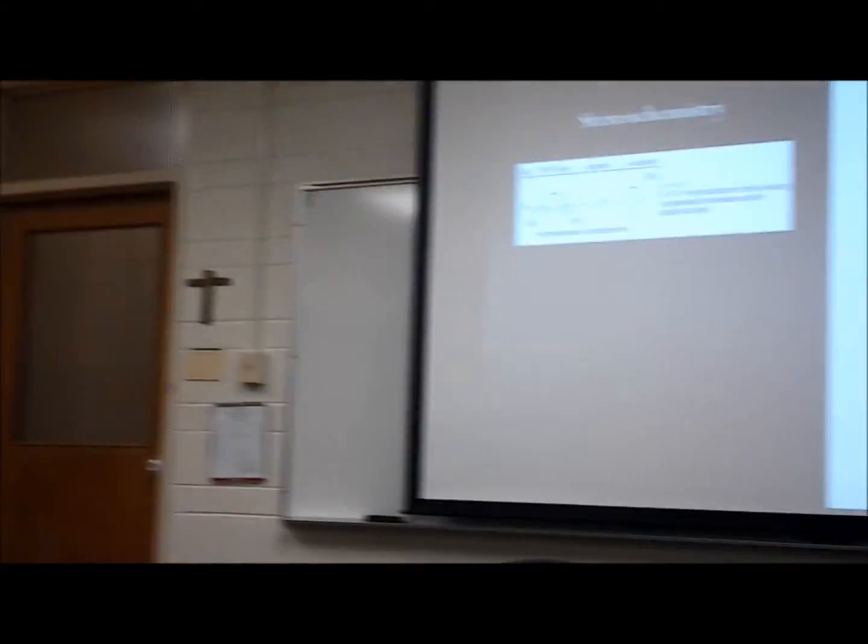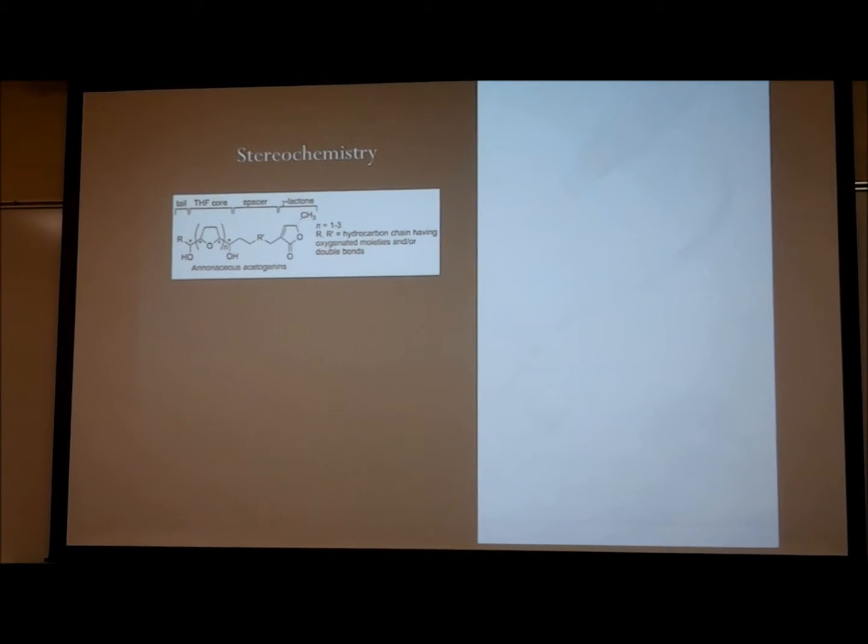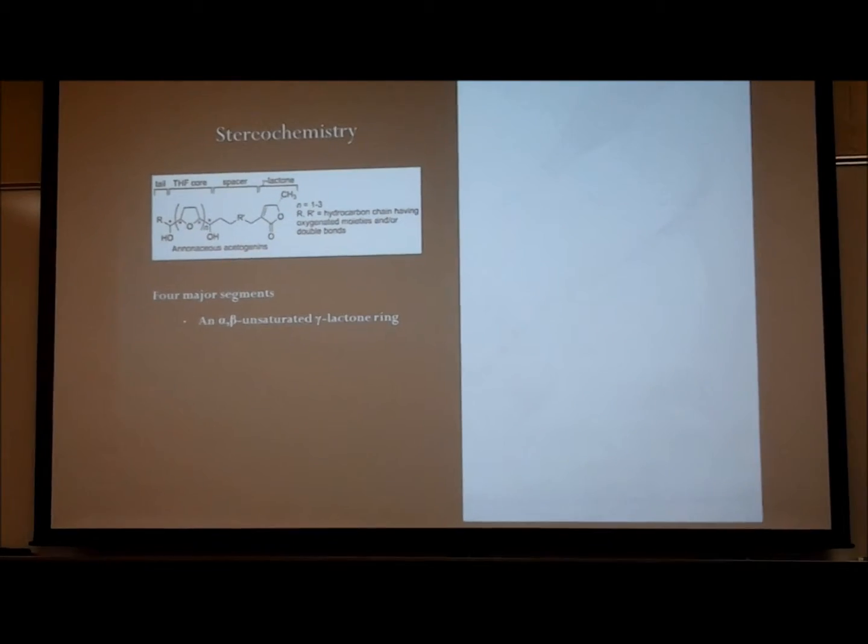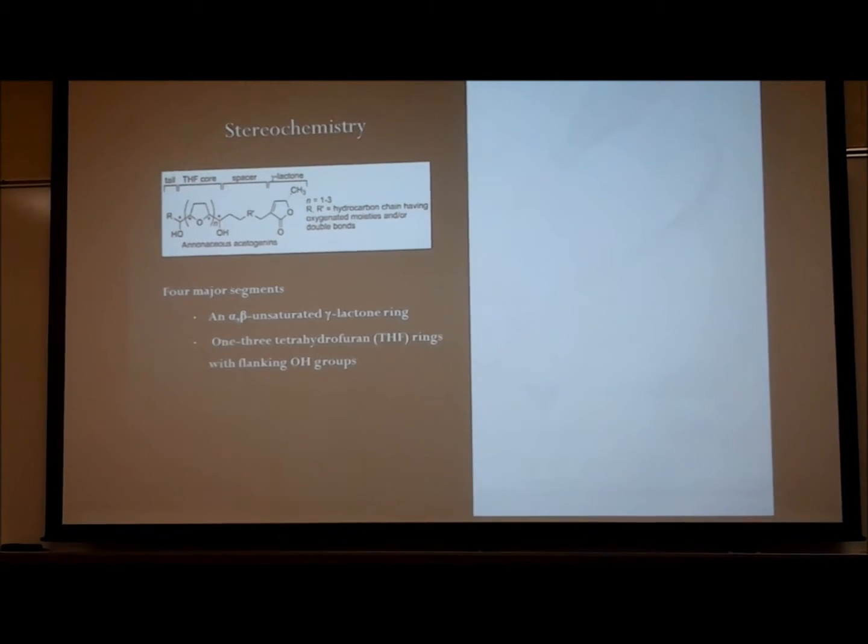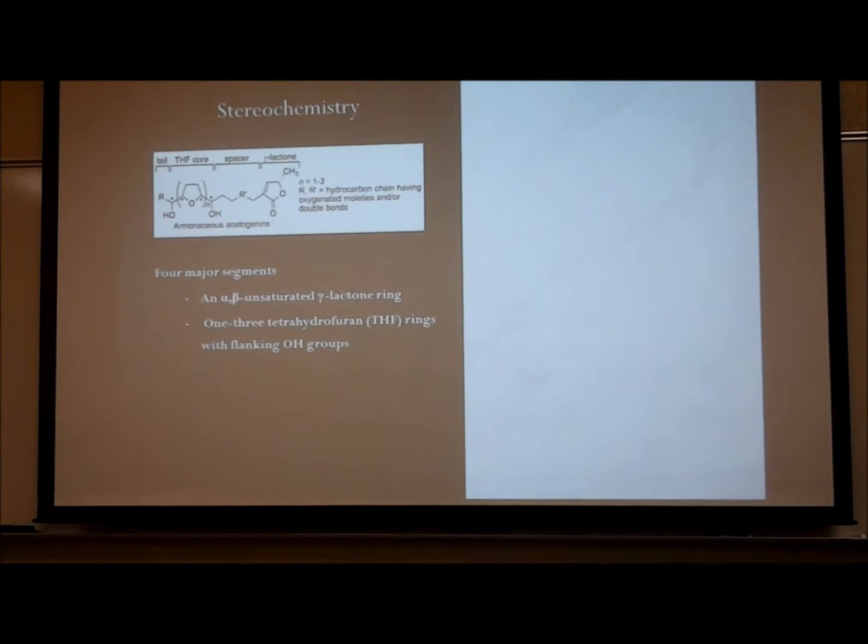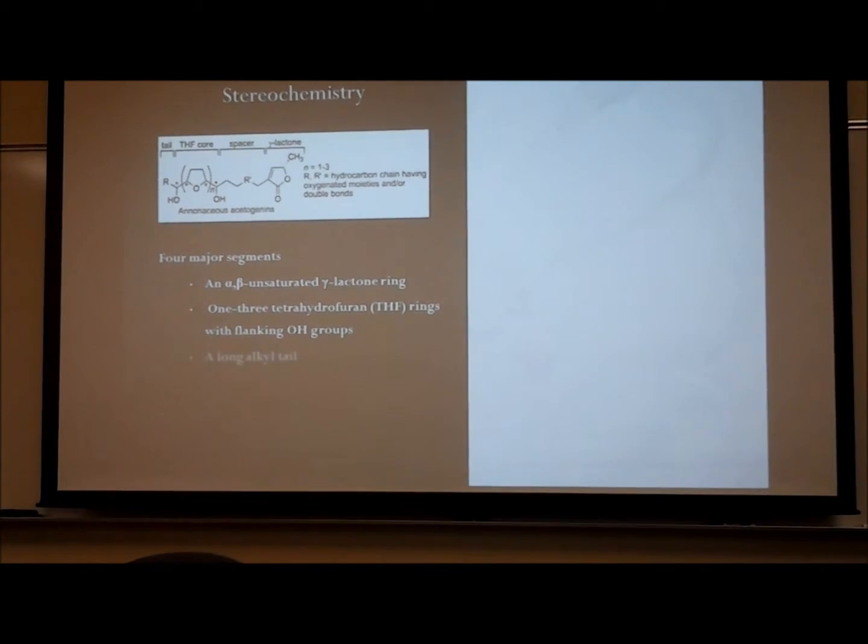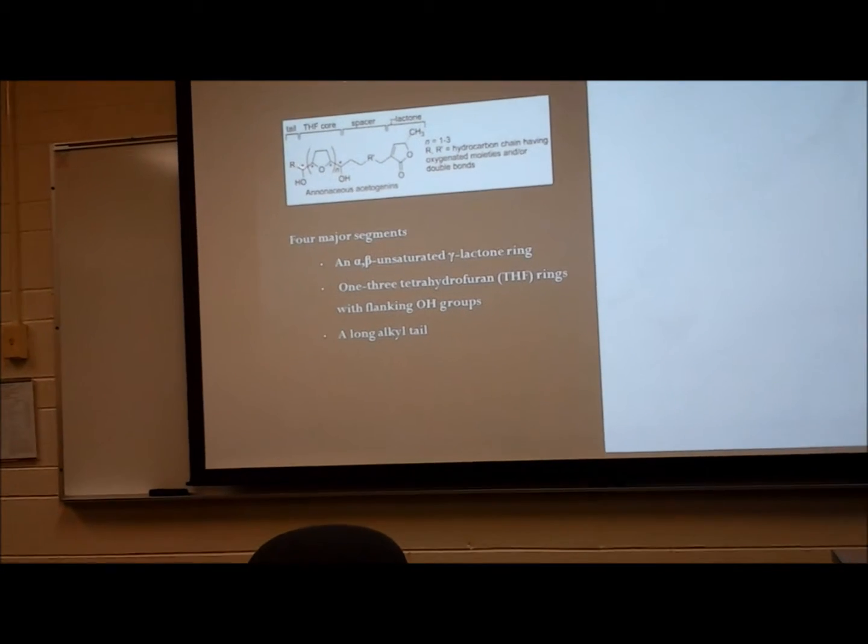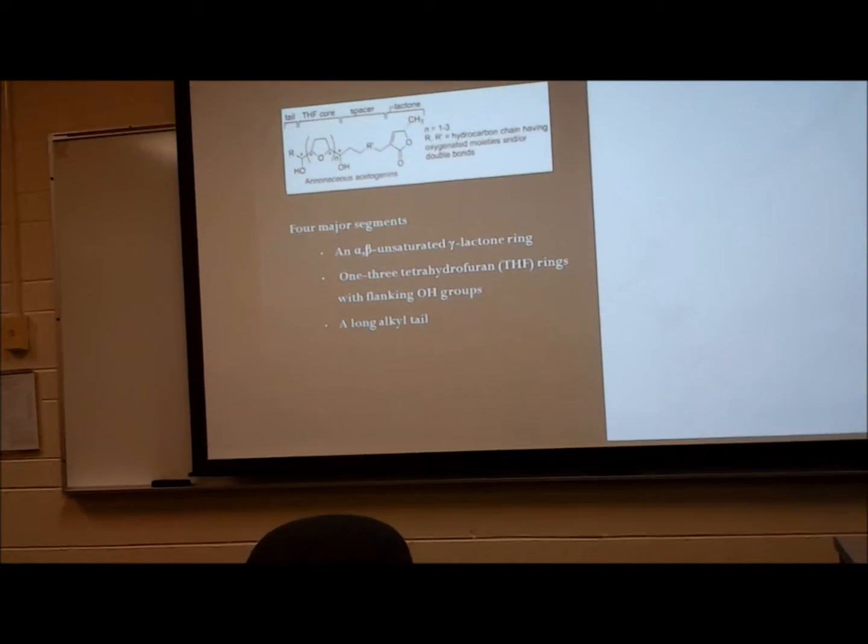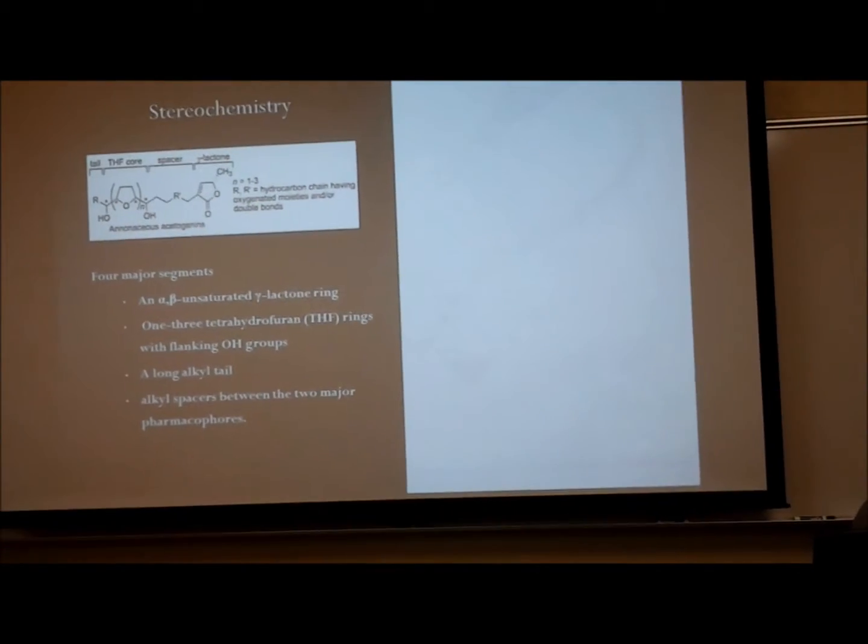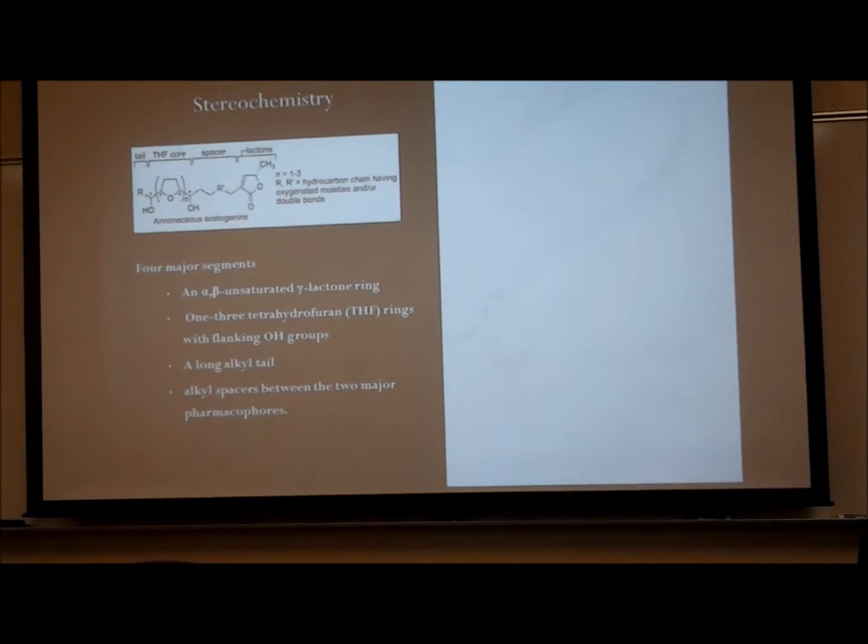The stereochemistry of acetogenins consists of four major factors: an alpha-beta unsaturated gamma-lactone ring, one to three tetrahydrofuran (THF) rings with flanking OH groups as you can see right here, a long alkyl tail which comes off the end of the THF core, and the alkyl spacers between the two major moieties, which are the gamma-lactone and the THF core.